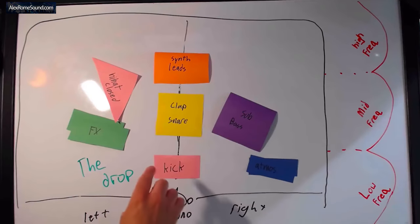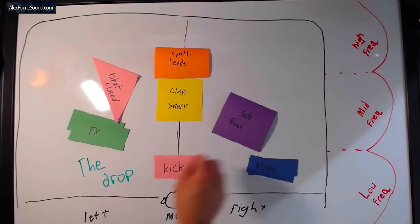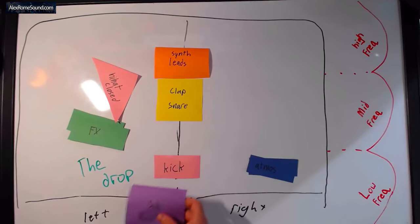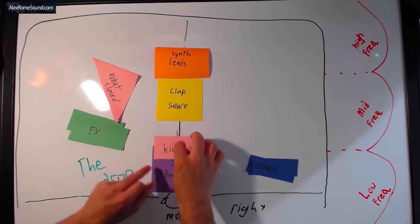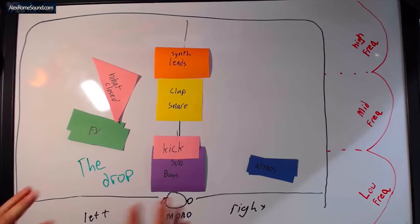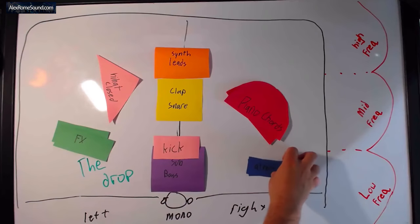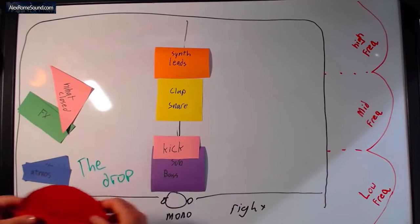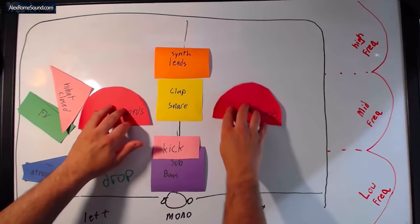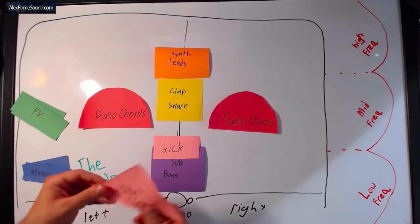Then we got our sub bass—our sub bass and our kick are gonna share this low area down here in the center. So this is all of our central instruments here. I forgot we had some piano chords too. This is where things get interesting in this drop, because these are the only instruments in the center. We have our piano chords but they're spread a little wide like this—they're not as wide as they can be but they're pretty wide. And we have our hi-hat which is panned all the way over here and this is a high frequency sound, so this is panned really wide to the right side.